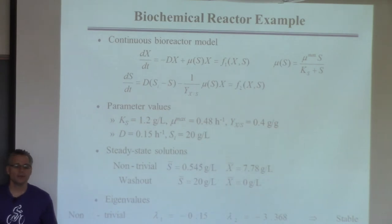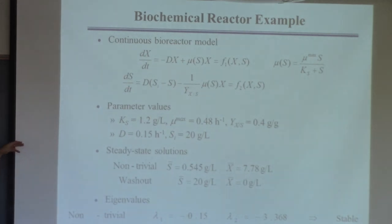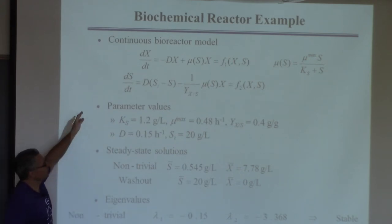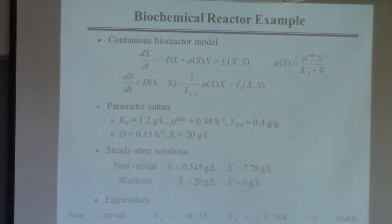Checking the washout steady state, it has two positive eigenvalues, meaning it's unstable. The system likes to rest at the stable steady state. However, doing this by hand is laborious — you have to find the steady state by hand, take derivatives, evaluate them, form the A matrix, and find roots of the characteristic polynomial. For a model with five differential equations you'd take 25 derivatives. So it'd be nice to automate this.